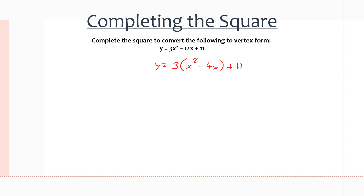After we've done this, we want to take this value, half it, and then square it to find the perfect square to get a perfect square trinomial inside the brackets. So what we want to do is half 4, which gives us 2, and then if we square it we get 4.